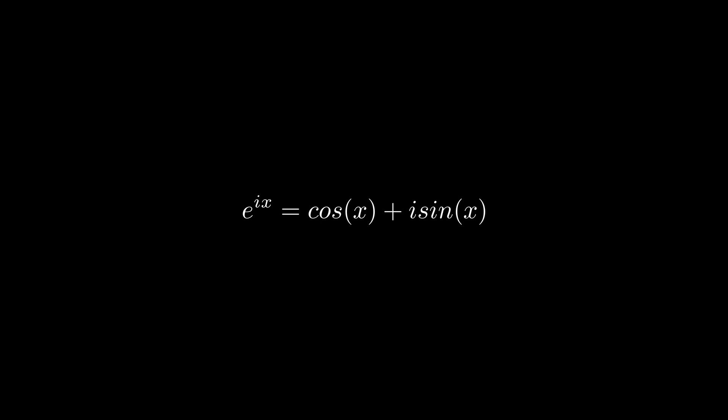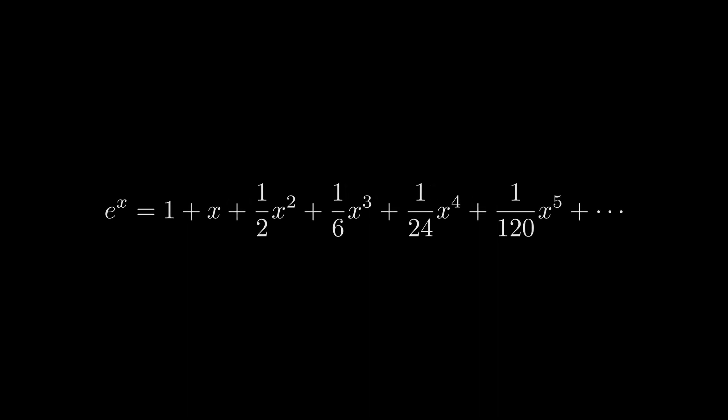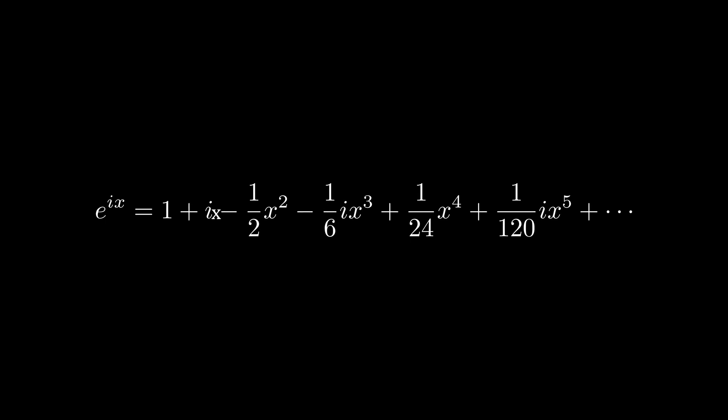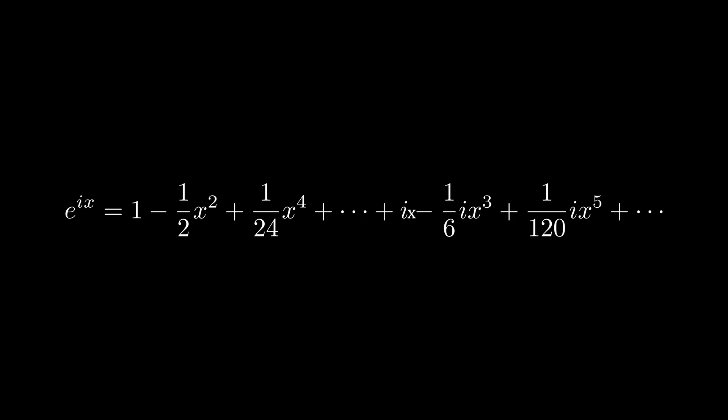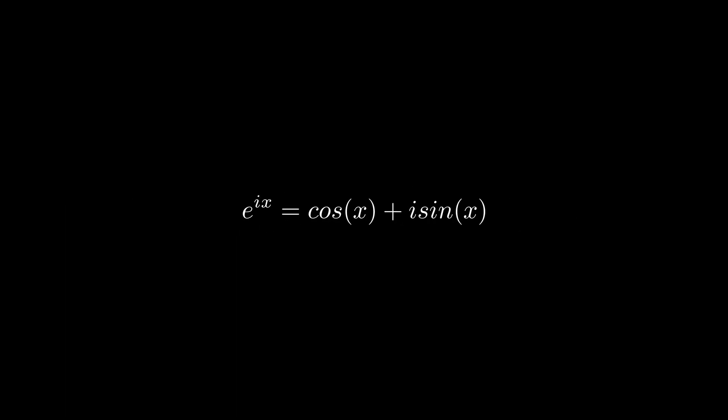Now let's derive the famous formula. Let's go back to the Taylor series for e to the x and plug in ix as the value of x. The first few terms include 1 plus ix plus one half times i squared times x squared. Since i squared equals negative 1, this term becomes negative. The next term gives negative one sixth ix cubed, and so on. When we separate the real and complex sides of this sum and factor out i, the real part is exactly the Taylor series for cosine of x, and the complex part is i times the Taylor series for sine of x.